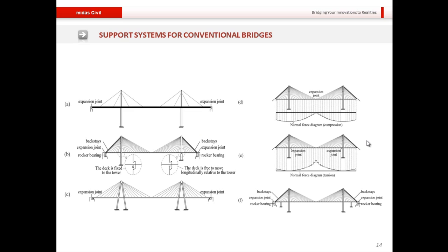This slide shows the six common support systems used for conventional cable-stayed bridges. In each system, the deck is allowed to move laterally in one way or another. While most systems utilize expansion joints at the ends, others — such as cases D and E — provide expansion joints at intermediate points. The choice depends on site conditions, cost, and aesthetic considerations.